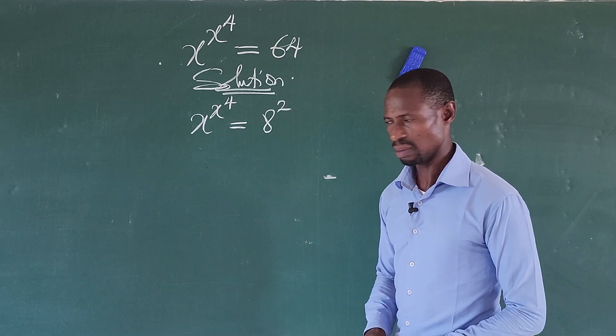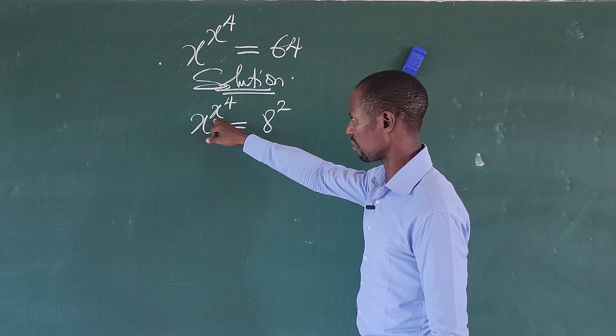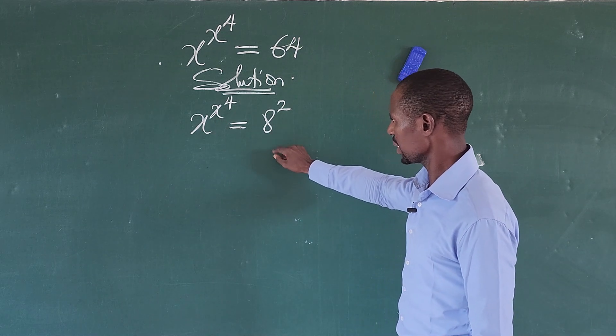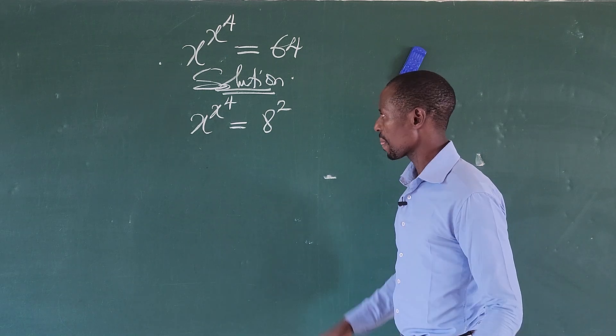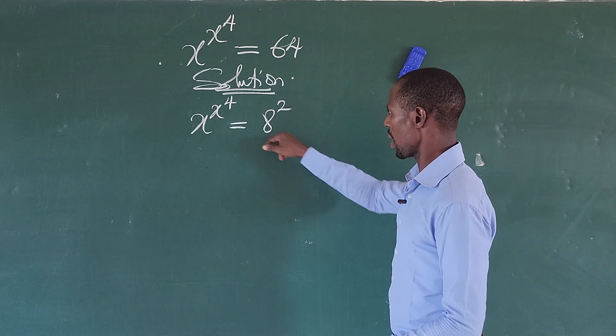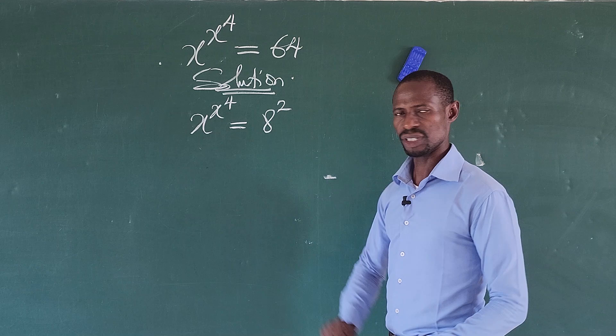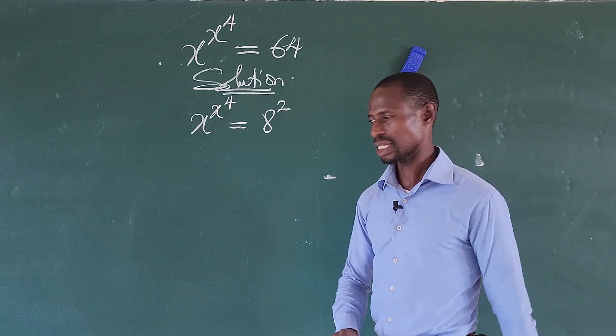Now see what we have on the board. We are having x to the power of x here, and here, can we bring out 8 at the exponent here? Yes. If we multiply the power here by 4, it will give us 8. So we can equally do the same to this other side.